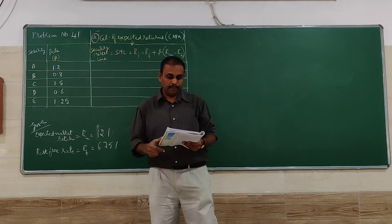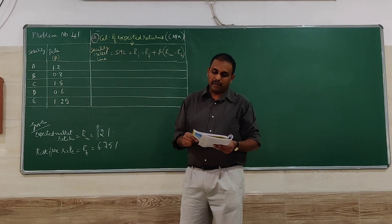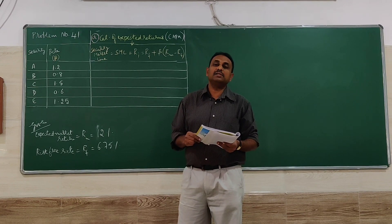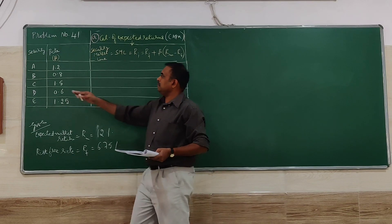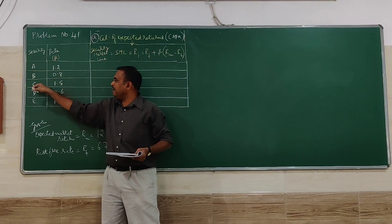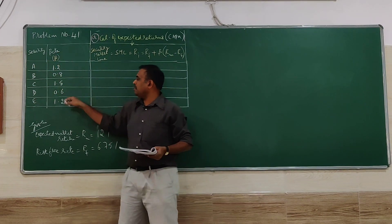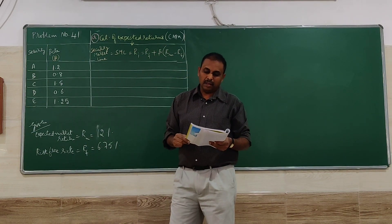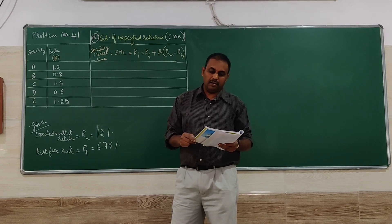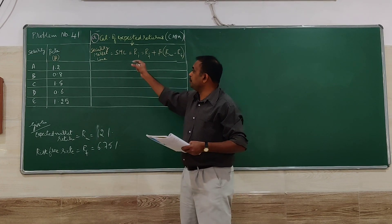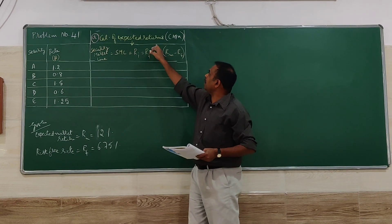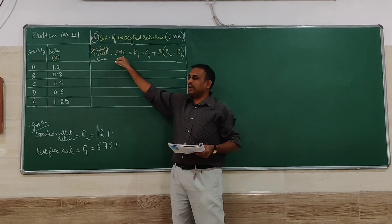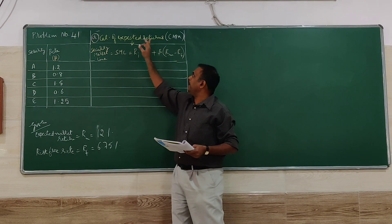The problem gives us securities A, B, C, D, E with their beta values. With the help of this, we're supposed to find the expected return or rate of return for individual securities. I have written here the expected returns to be calculated using the CAPM model. Whenever you have to calculate individual expected returns, we have to use SML. I have written the formula here and will substitute for that.